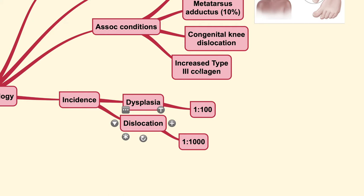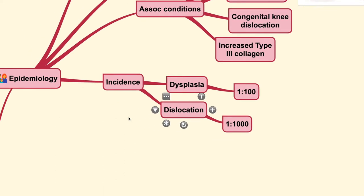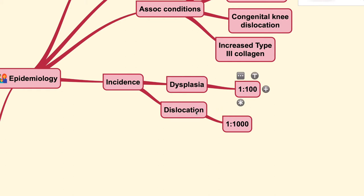DDH is also associated with increased collagen type 3. The body has many collagen types; type 1 and type 2 are those usually found in the musculoskeletal system, and type 3 is not the good type. For the incidence, dysplasia has a rate of around 1 in 100 babies born, and dislocation is found in 1 in 1,000 babies born. Dysplasia means the body's structures are not forming as they should, and these patients have a higher risk of developing dislocation — so dysplasia can lead to dislocation.